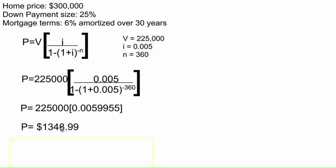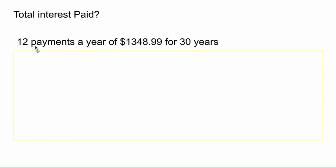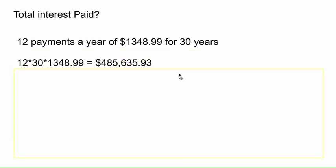Our secondary question was: how much is the total interest paid over the course of these 30 years? We're paying 12 times a year, and every check we write to the bank is this amount, for 30 years. So 12 times 30 is 360 payments, times the size of each payment, gives us the total amount of money we actually sent to the bank. Over the course of 30 years, we sent the bank $485,635.93.